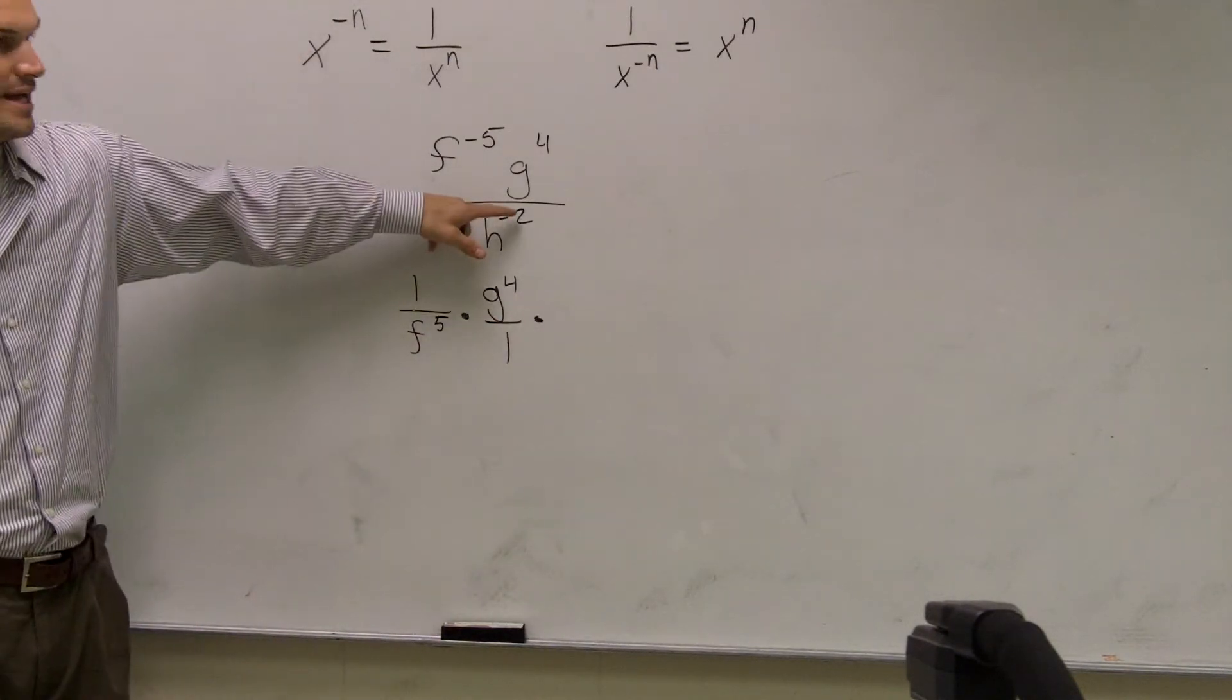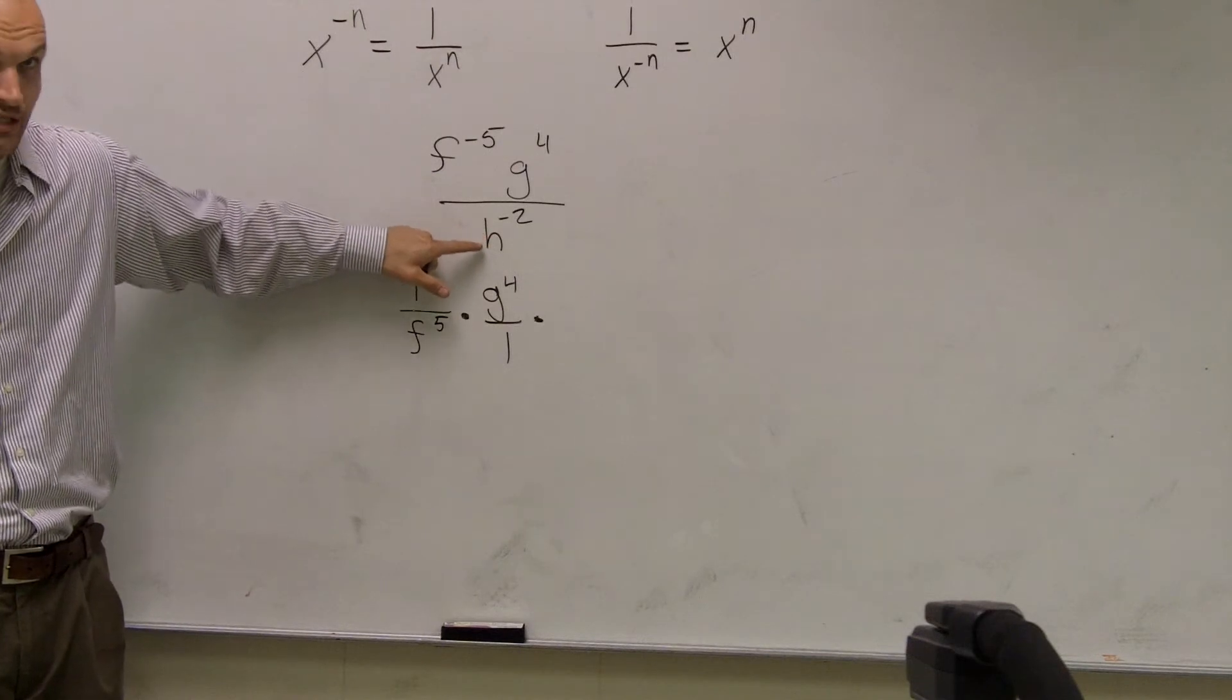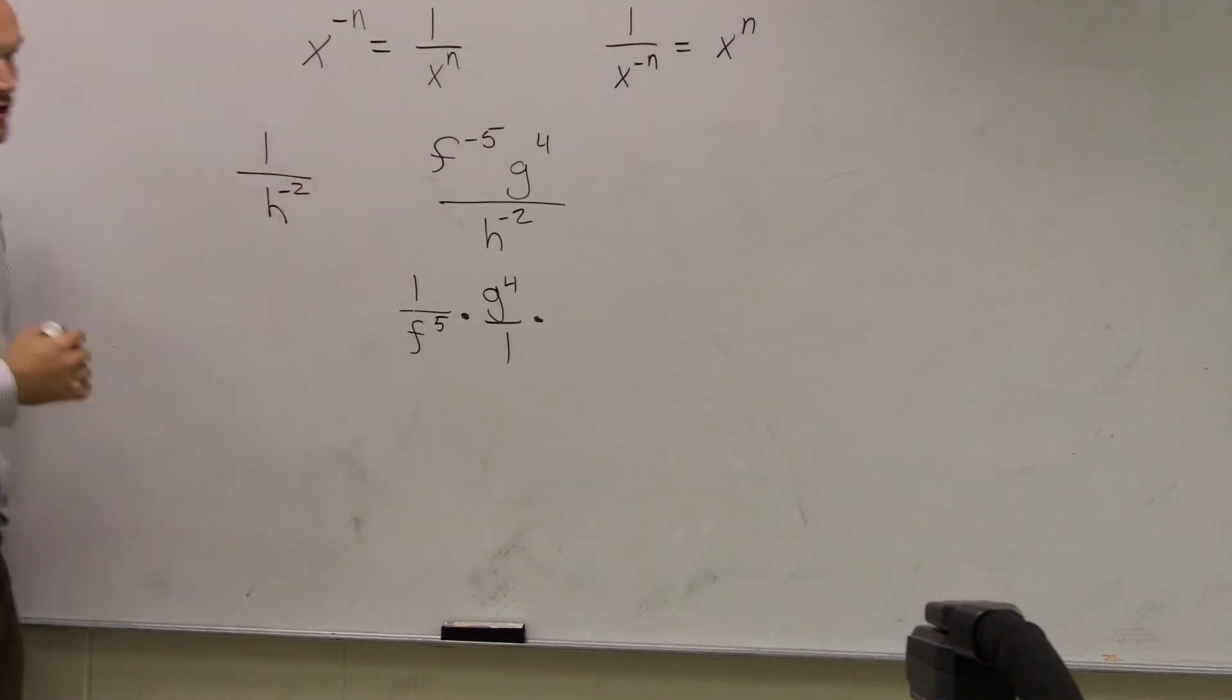Times you have h to the negative second. This is actually under. This is your denominator. So this is the same thing as 1 over h to the negative 2.